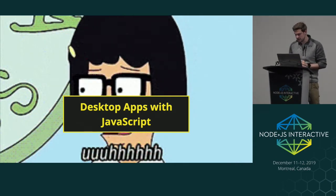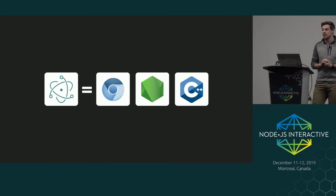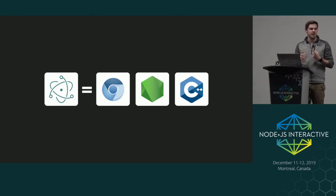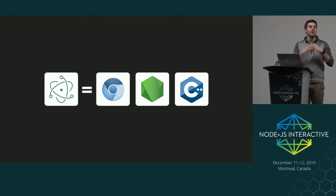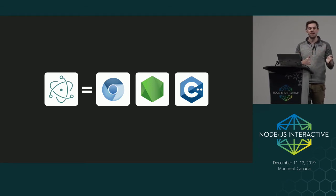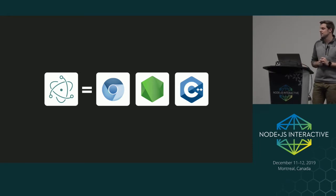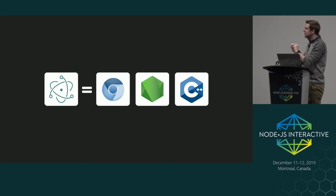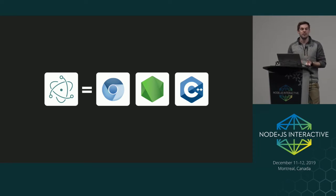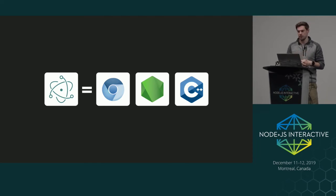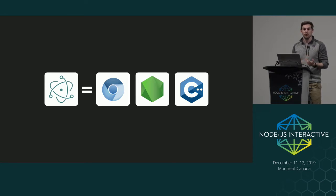So what is Electron? Electron is a combination of three major components. The first is the Chrome content module — basically an analog to Chromium: anything Chrome deems necessary to build a browser minus everything Google-specific. No Google profiles, but everything you need to turn JavaScript, HTML, and CSS into pixels. Then we have Node.js, the V8 runtime we all love. And then we have a very thick layer of C++ around it that implements APIs for building a native application — things like interacting with native windows, sending native notifications, or interacting with a touch bar.